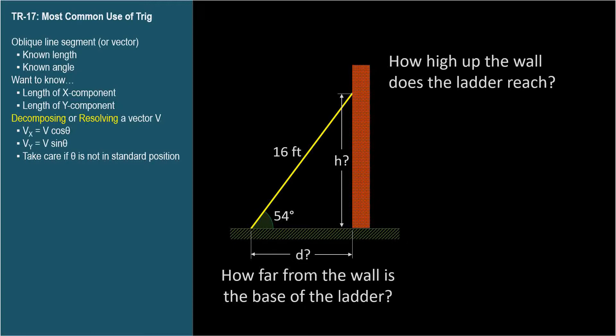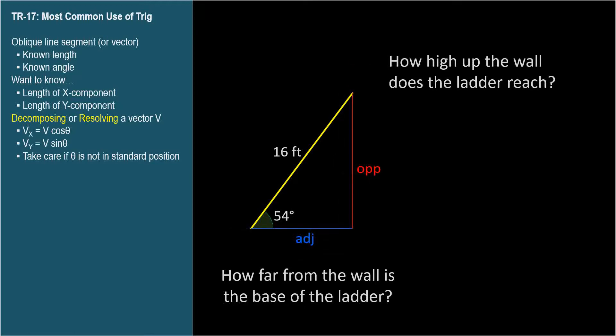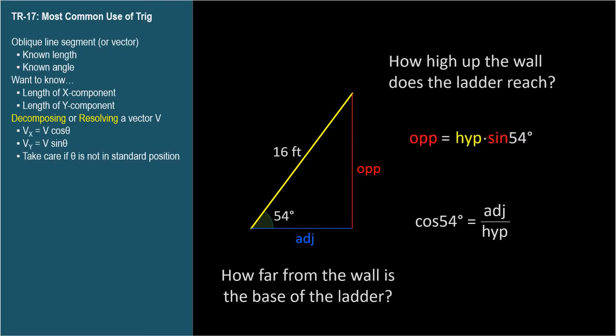We have a right triangle where we know the angle with the x-axis and the length of the hypotenuse, and we want to know the length of the sides. Let's write the SOH-CAH-TOA equations: sine 54° equals opposite over hypotenuse, and cosine 54° equals adjacent over hypotenuse. Rewriting to isolate the side lengths: opposite equals hypotenuse times sine 54°, and adjacent equals hypotenuse times cosine 54°. These equations tell us that the cosine of theta is the fraction of the hypotenuse that extends in the x-direction, and the sine of theta is the fraction that extends in the y-direction.